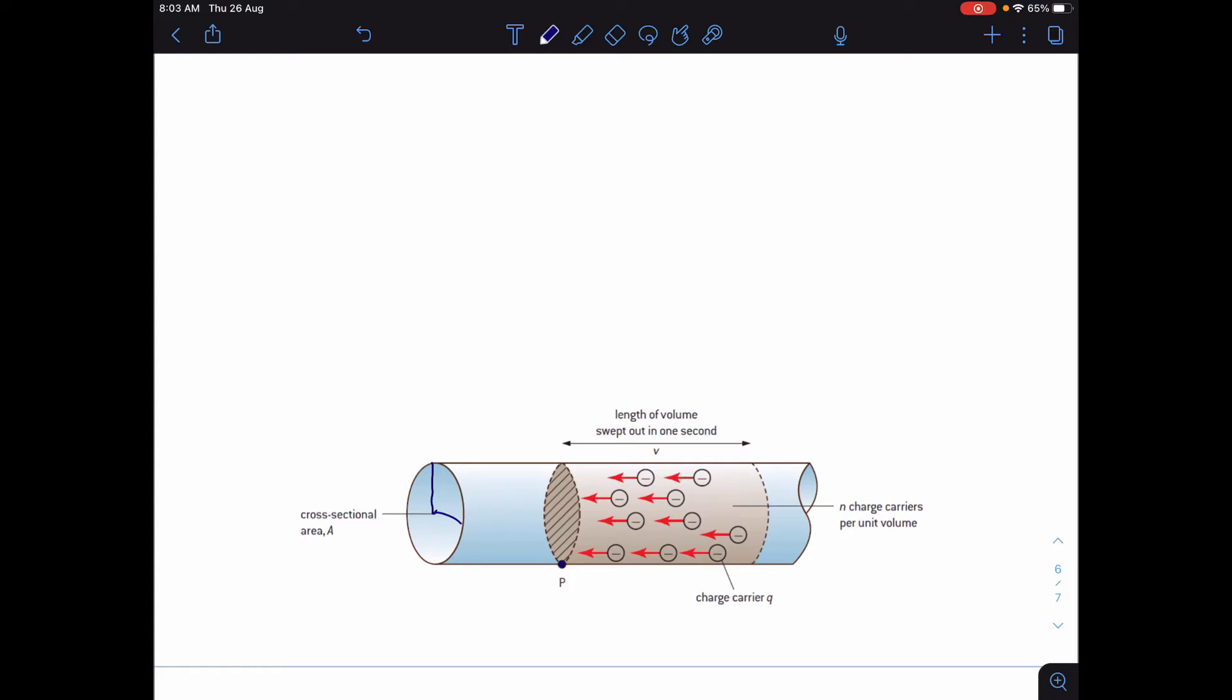Now the velocity of the electrons is the distance that they're travelling per unit of time. In one second, if we take the time of one second, then the magnitude of the velocity is equal to the magnitude of the distance that they've travelled. So past point P in one second...